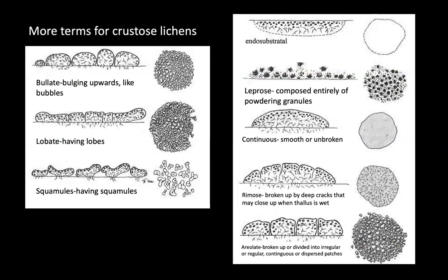More terms for crustose lichens — every time you find a term you don't know, look it up. Endosubstratal crusts are actually growing within the substrate, within the rock or bark. Leprose means composed entirely of powdery granules — like the dust lichens. A continuous or smooth thallus is unbroken. In the cross sections shown, the black dots represent the photobiont layer and the lines represent the hyphal component like the medulla or cortex. Rimose means broken up by deep cracks that may close up when the thallus is wet.